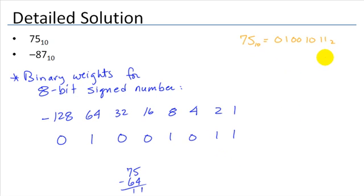When all of those weights are added together, we get 75 base 10.